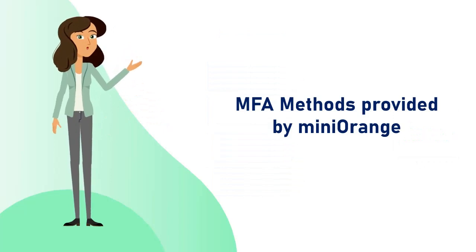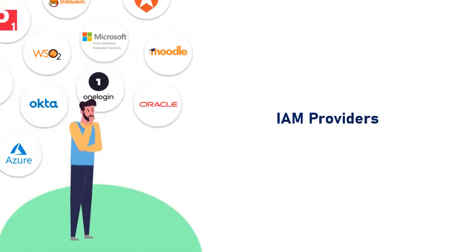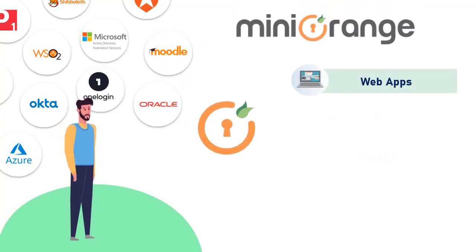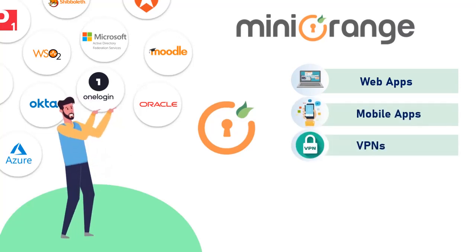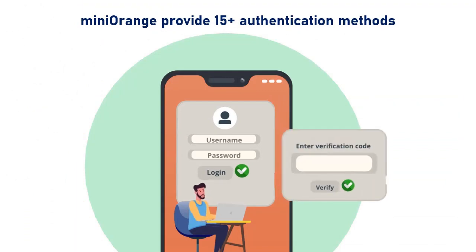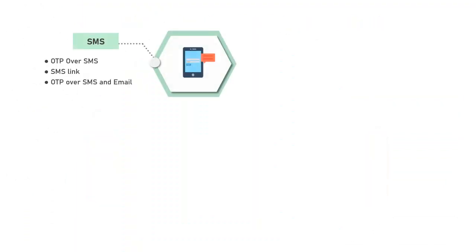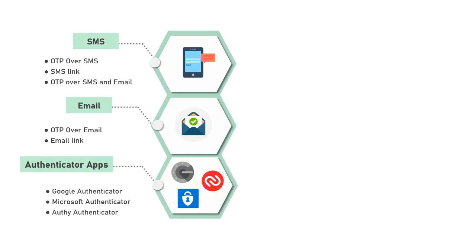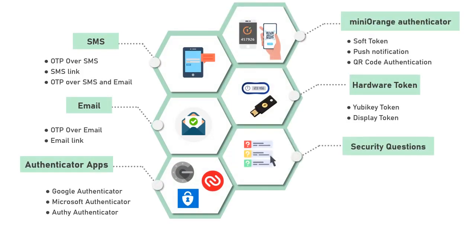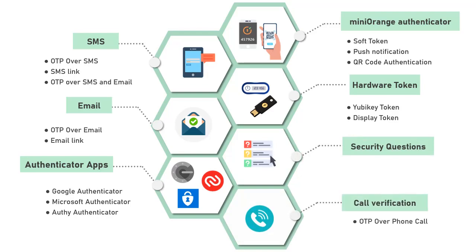Now let's see the different MFA methods provided by MiniOrange. Unlike other IAM providers, MiniOrange provides multiple MFA methods to add an extra layer of security for your web apps, mobile apps, VPNs, and Windows-based solutions. MiniOrange provides 15-plus authentication methods for you to choose from, like SMS, email, authenticator apps, MiniOrange Authenticator, hardware token, security questions, call verification, and many more.